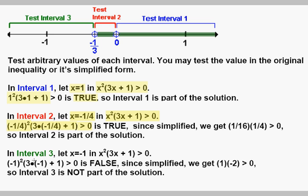Now checking Interval 3, which goes from negative one third to negative infinity. We pick x equals negative 1. Plugging into the factored form x squared times (3x plus 1) greater than 0: negative 1 squared is positive 1, and 3 times negative 1 plus 1 is negative 2. Positive 1 times negative 2 is negative 2, which is not greater than 0 — false. So we do not shade that portion of the number line.